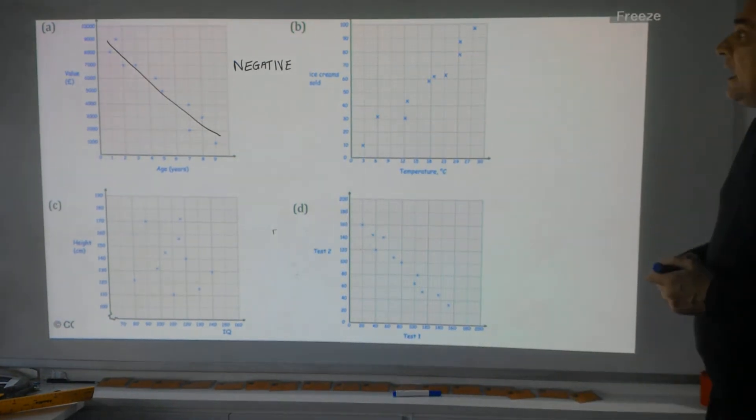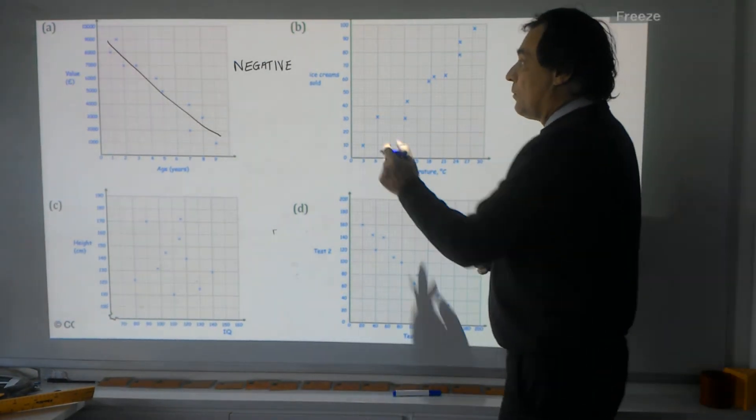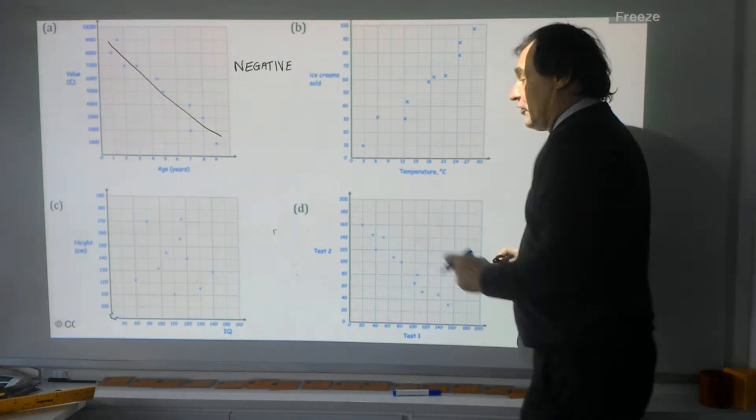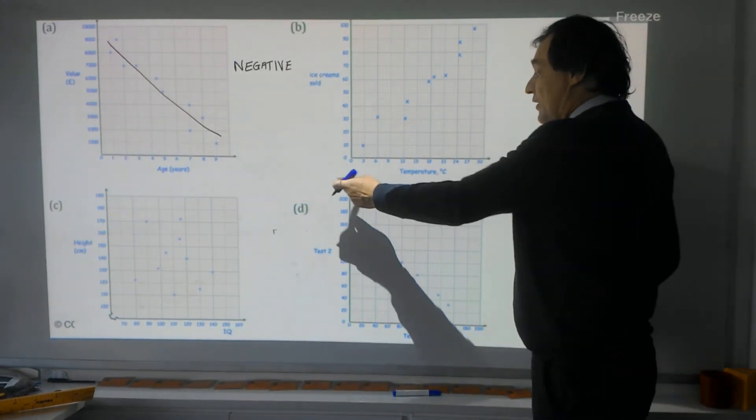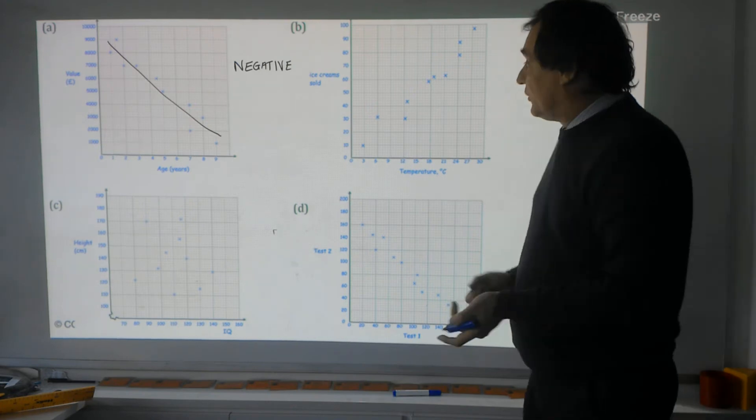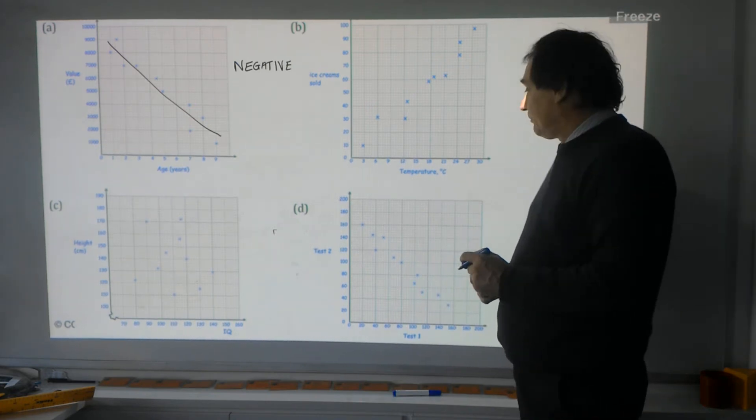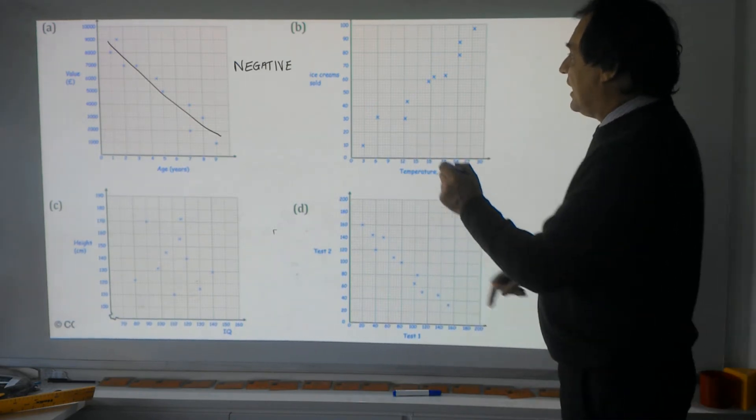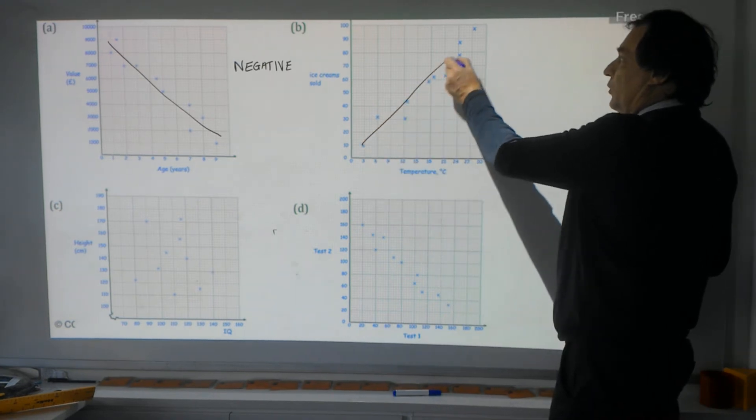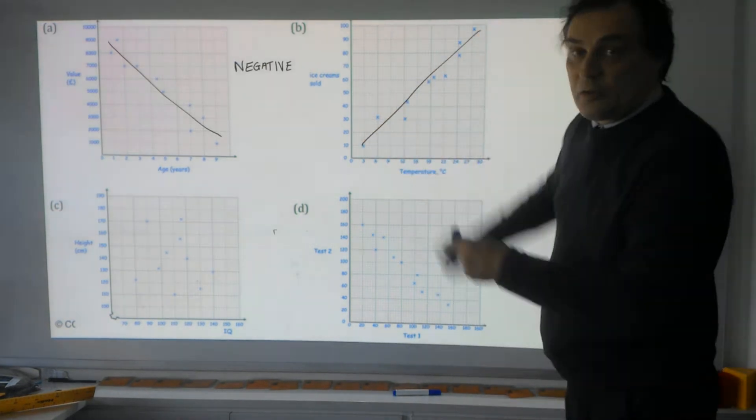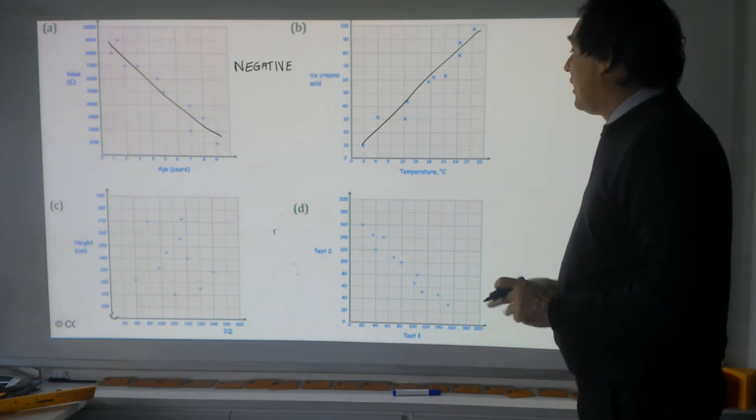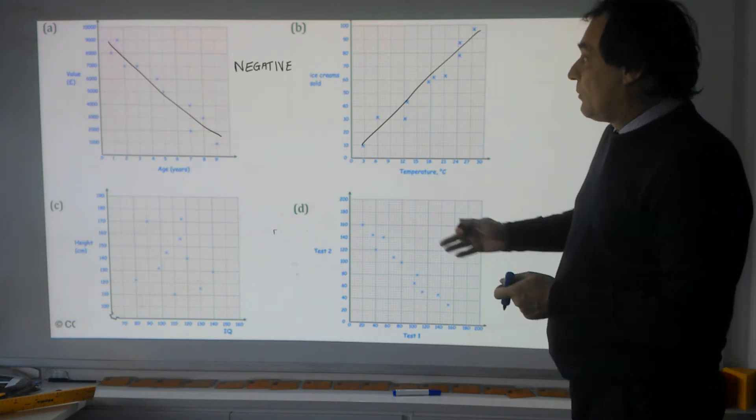Let's have a look at this graph here. We've got ice creams sold going upwards, and across is the temperature in degrees C. As you can see, this time the line is going upwards, or the crosses are upwards. We're drawing a line there to do a general summary of them.